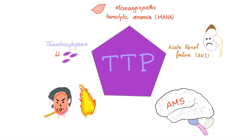By the way, you don't have to wait until you find all five stigmata before making the diagnosis. If you find microangiopathic hemolytic anemia, thrombocytopenia, fever, and altered mental status — you have your diagnosis, even if acute renal failure hasn't developed yet.